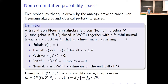You've all seen von Neumann algebras before in several talks. What I want to emphasize here, as I recap the definition, is that we can view these as a non-commutative analog of a probability space. So we have a tracial von Neumann algebra with a trace that is unital, tracial, positive, faithful, and normal.